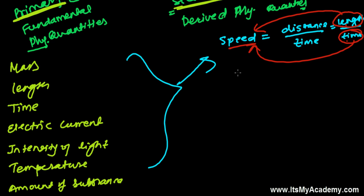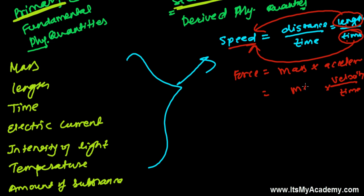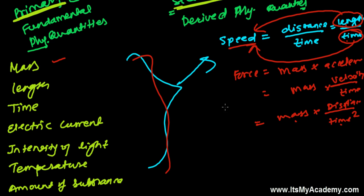Similarly, take the example of force. Force equals mass times acceleration. Mass is itself a fundamental quantity. Acceleration is velocity divided by time, and velocity is displacement divided by time — so acceleration involves length divided by time squared. Therefore force involves mass, length, and time, making it a derived quantity formed from fundamental quantities.